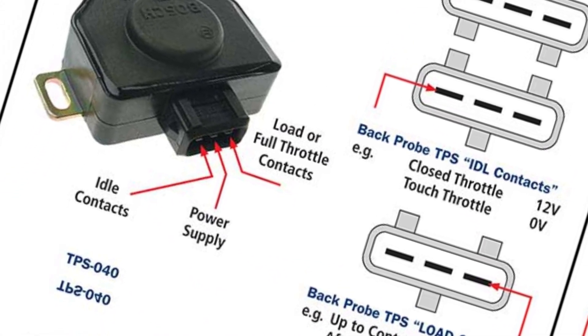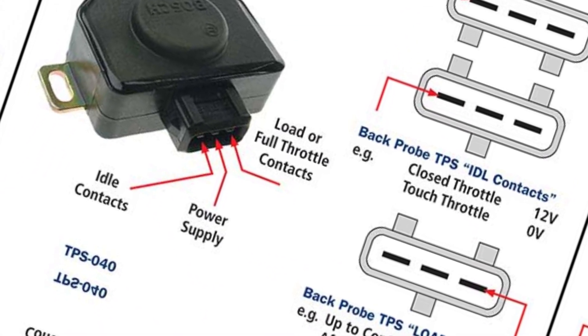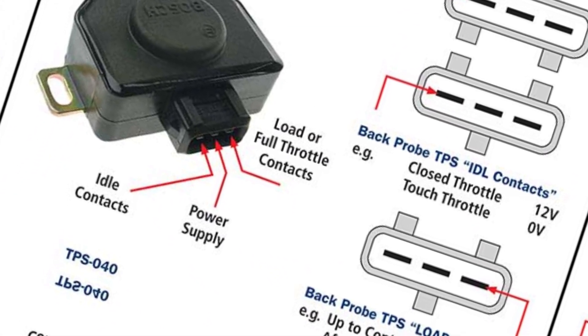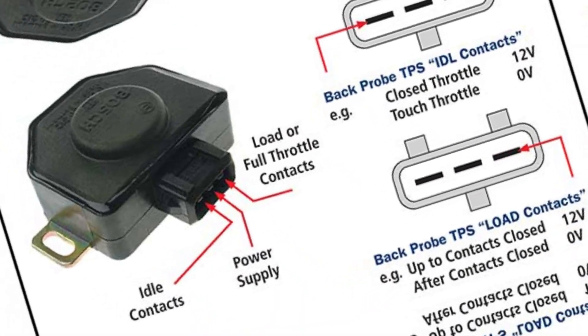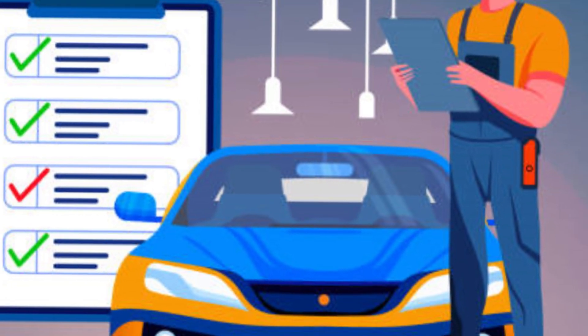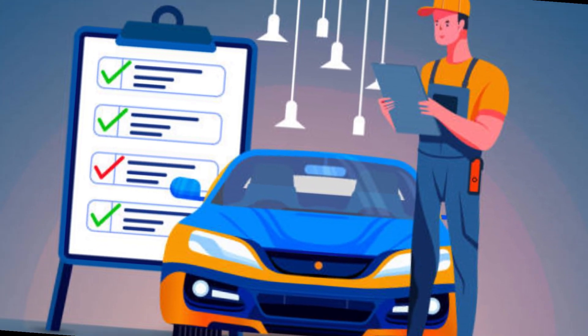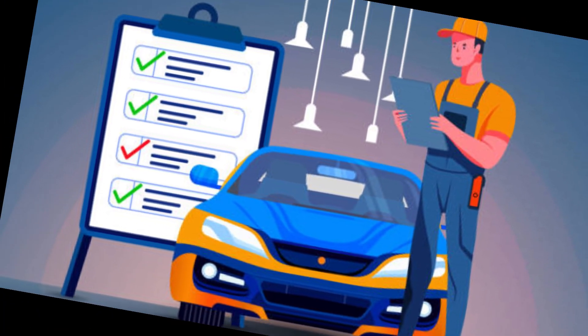3. Symptoms of a bad TP sensor. First of all, the check engine light came on and generates fault DTCs: P0-122, P0-123, P0-124, and P2135.